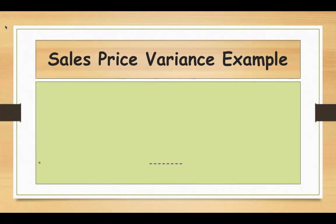Now we are going to calculate the sales price variance using an example. This is an easy variance to calculate — all we need to do is compare the standard selling price with the actual selling price. If the standard selling price is higher than the actual selling price, there will be an adverse sales price variance, and vice versa.